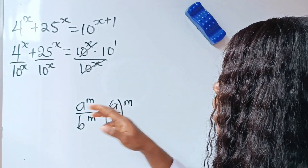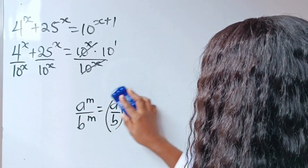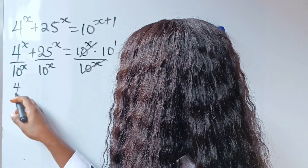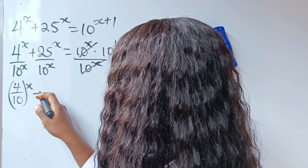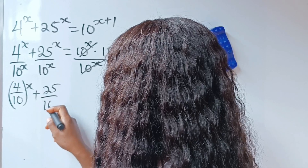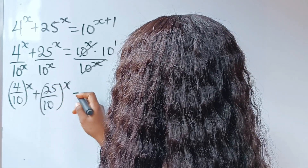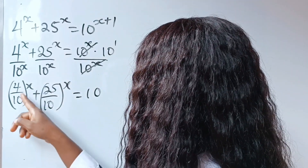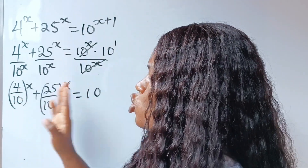So we are going to apply this law here and here. When we do that, we have 4 divided by 10 raised to the power of x, plus 25 divided by 10 raised to the power of x, is equal to 10. Now, what they have in common is 2.